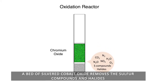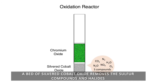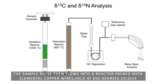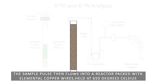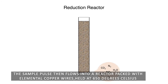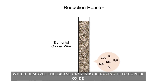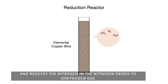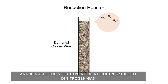A bed of silvered cobalt oxide removes the sulfur compounds and halides. The sample pulse then flows into a reactor packed with elemental copper wires held at 650 degrees Celsius, which removes the excess oxygen by reducing it to copper oxide and reduces the nitrogen in the nitrogen oxides to dinitrogen gas.